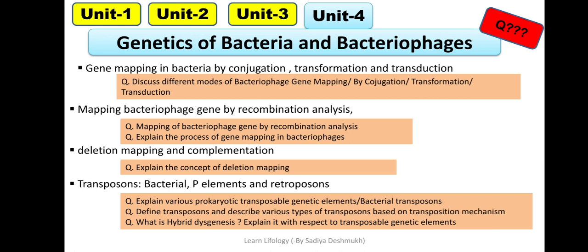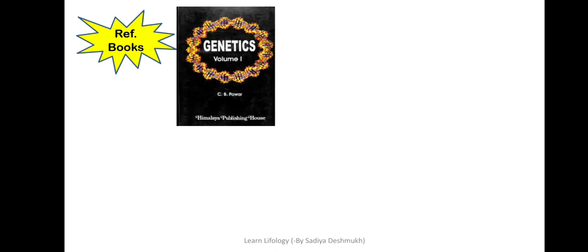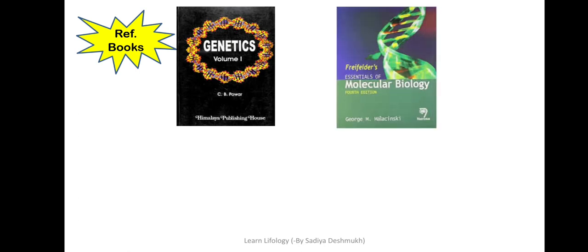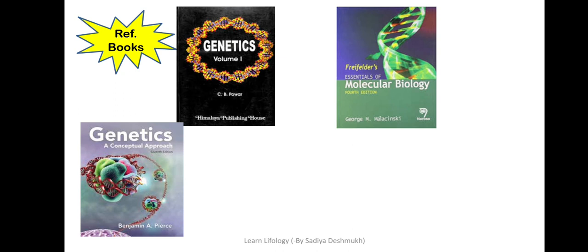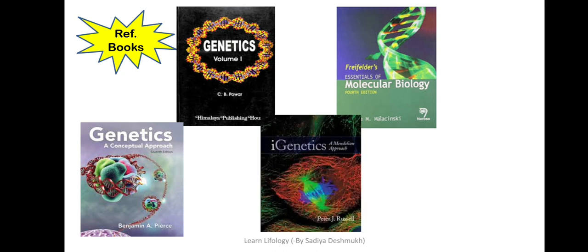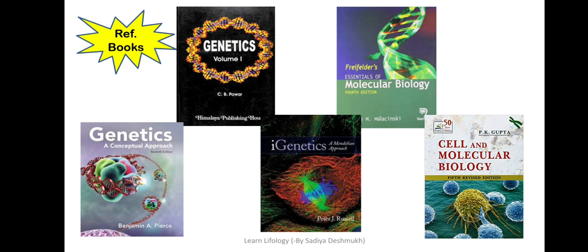Lastly, let's discuss books - which reference books we can use. There are a number of books, but I have mentioned a few good books which I have referred to. You can read many others as well, and reading books is very important. For genetics, CB Power is the best book; everything is explained in detail. Then Freifelder Molecular Biology. You can look at Genetics: A Conceptual Approach by Benjamin Pierce, then iGenetics by Russell. You can also read Nelson and Cox, and Cell and Molecular Biology by PK Gupta. If you want easy language, PK Gupta is very good, and CB Power is also very good. These are Indian authors and the explanation is really nice. Thank you for watching this.